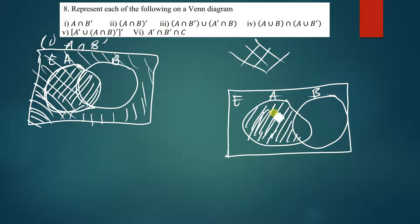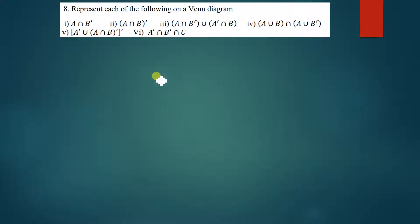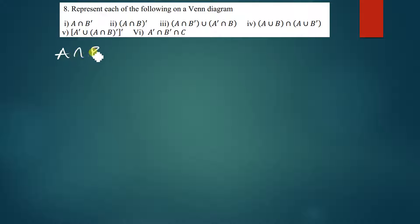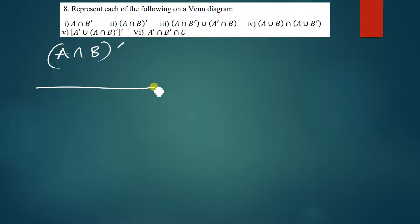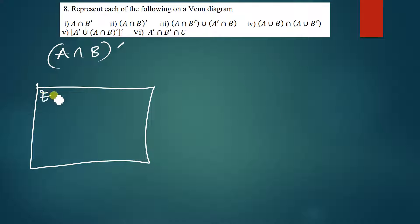Let's quickly move on to the next one. The next one says we sketch or present (A intersection B) complement on the Venn diagram. We do the same — we do a sketch with A intersection B in the sketch.